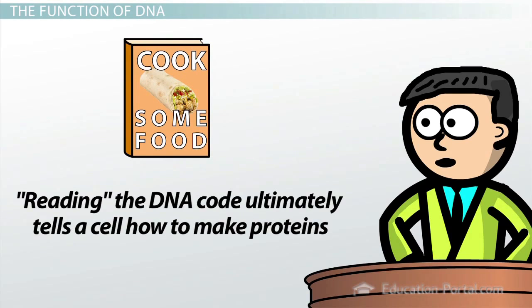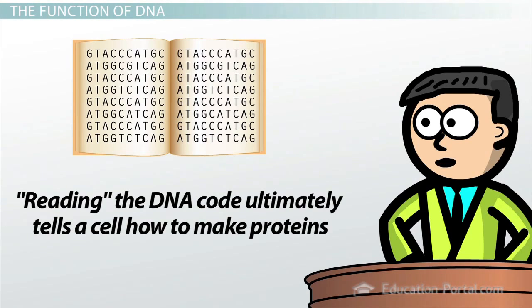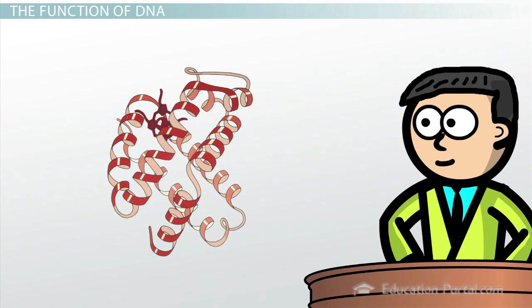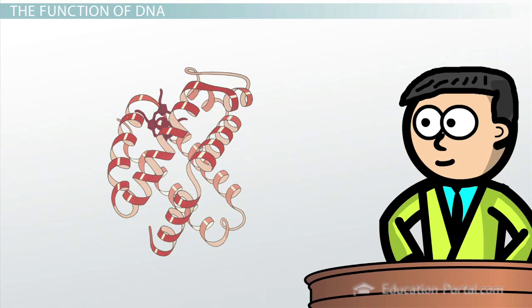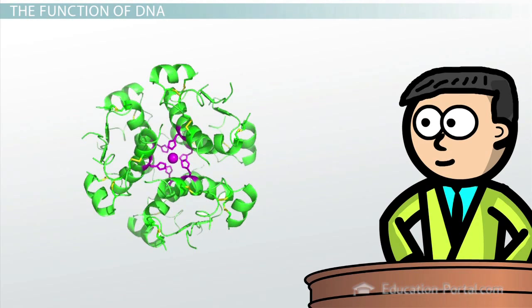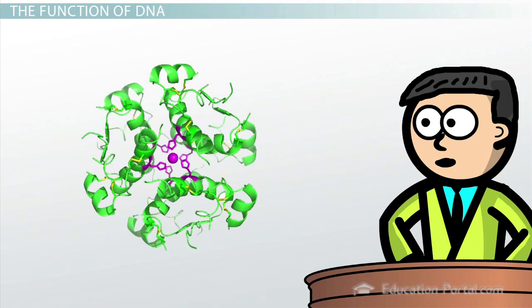Reading the DNA code ultimately tells a cell how to make proteins that it can use to perform various functions necessary for life. For instance, reading a specific sequence of DNA tells one cell how to make hemoglobin protein to carry oxygen molecules throughout the body. On the other hand, another cell might read a different recipe which tells it how to make insulin protein to control blood sugar levels.